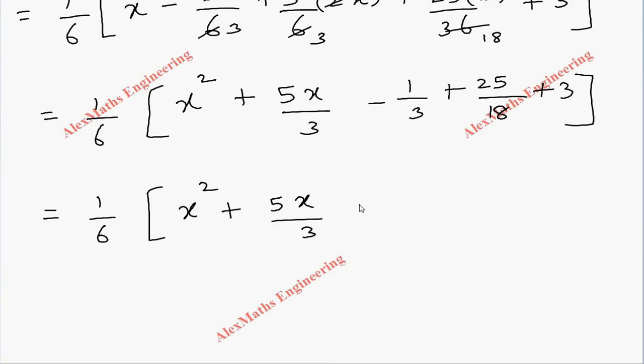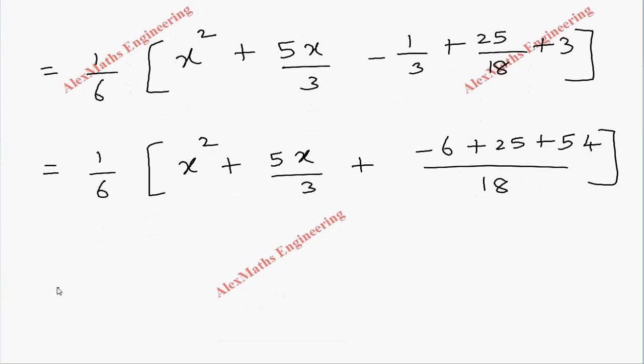We have to simplify the constants: x² + 5x/3. Let's take LCM, which is 18. So here it becomes -6 + 25 + 54. That gives us 73. Finally we get 1/6[x² + 5x/3 + 73/18].